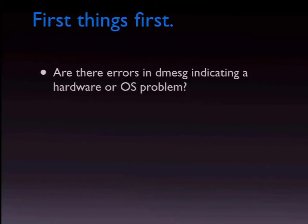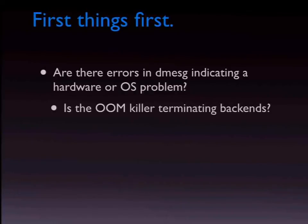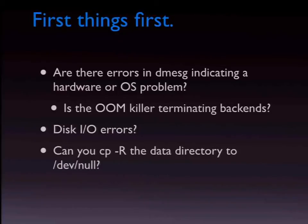Is there fundamentally broken hardware? You probably want to fix that problem first — are there errors at the system level about bad sectors? Is the OOM killer terminating backends? Find that in dmesg or syslog. Are you getting disk I/O errors? Can you actually copy the whole thing to /dev/null? cp -r the whole Postgres data directory to /dev/null and see if it can read every sector.